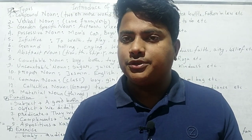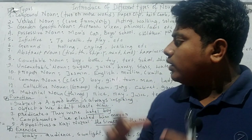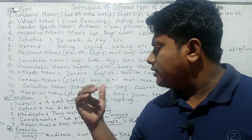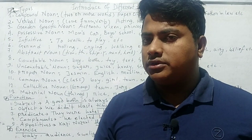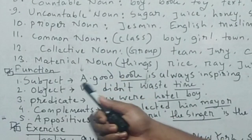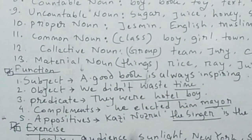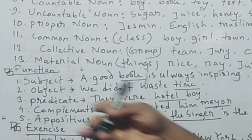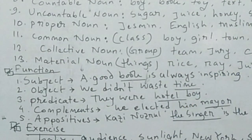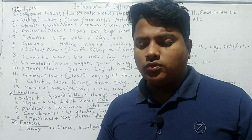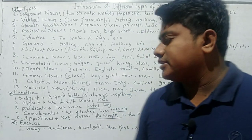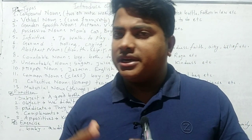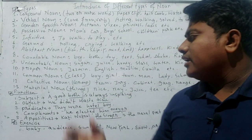Now let's look at the functions of nouns. I have shown five functions here. First, nouns act as subjects — for example, 'A good book is always inspiring.' Here 'book' is the subject, so a noun can work as a subject. Second, nouns work as objects — for example, 'We didn't waste time.' Here 'time' is the object. An object can be direct or indirect.